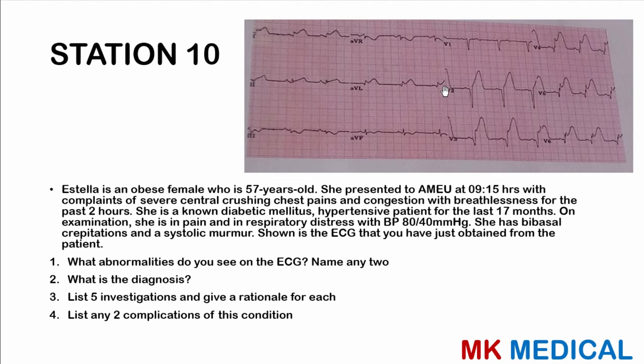Fourth, a chest X-ray — given the bibasal crepitations, expect a possible pleural effusion pointing towards heart failure, which is also more reason to order the echocardiograph. Fifth, a full blood count with differential to rule out possible infections and features of anemia — anemia can also give a systolic murmur despite the low blood pressure. An increased heart rate may also be present.